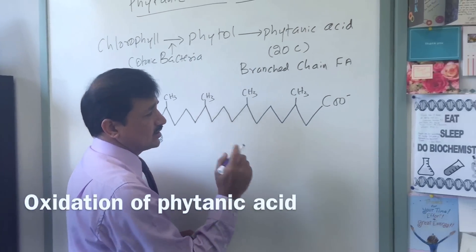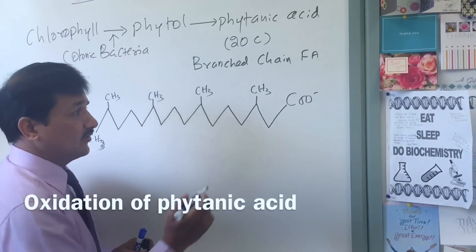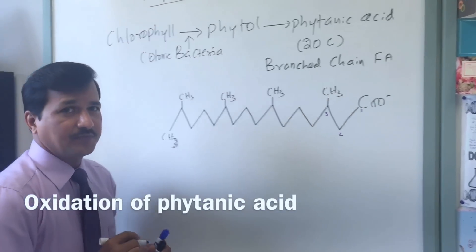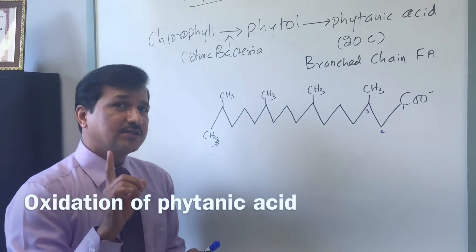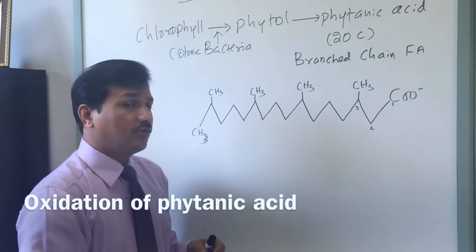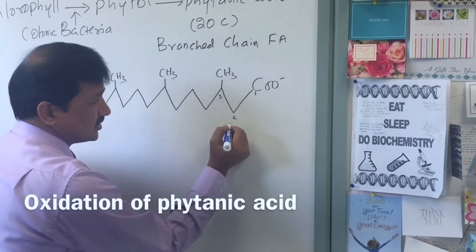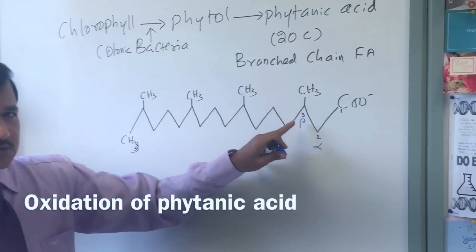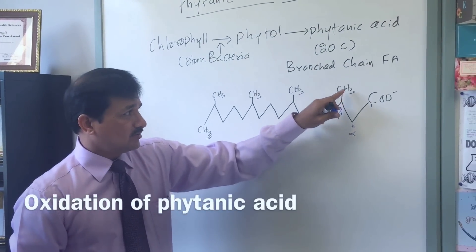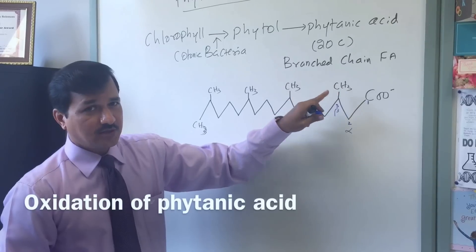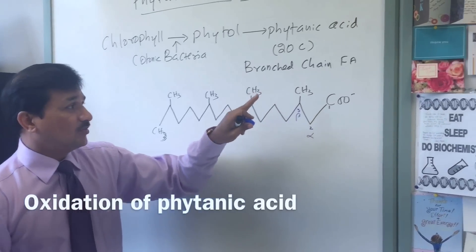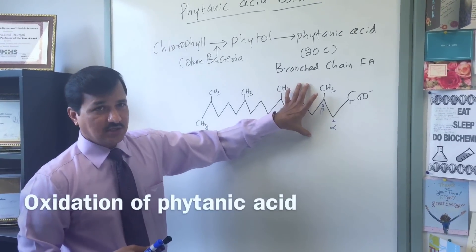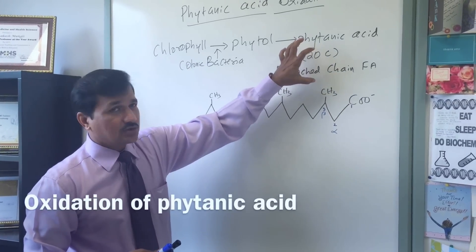The classic way of numbering the fatty acid: this is the number one carbon, number two carbon, and this is the number three carbon. In beta oxidation, oxidation of the beta carbon goes on. The first carbon is the carboxyl carbon, second carbon is the alpha carbon, and the third carbon is the beta carbon. In order to conduct beta oxidation, the beta carbon has a methyl group here — that is not possible for beta oxidation to continue because there is a steric hindrance. So beta oxidation cannot go on for this particular fatty acid.